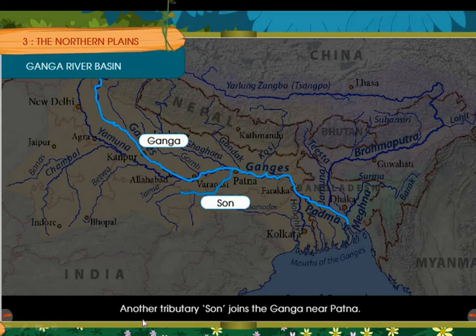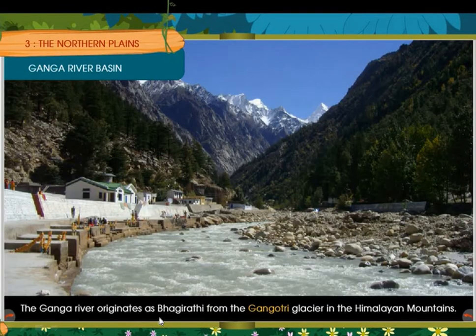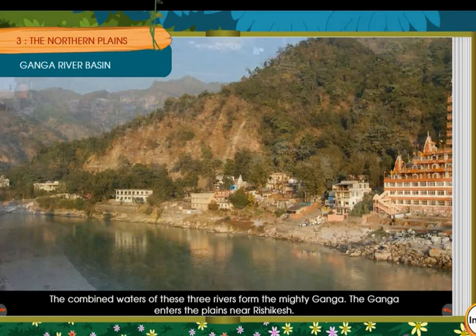The Ganga river originates as the Bhagirathi from the Gangotri glacier in the Himalayan mountains. It flows at high speed down the mountain slopes, then joins the Alaknanda and Mandakini rivers. These combined waters form the mighty Ganga, which enters the plains near Rishikesh.